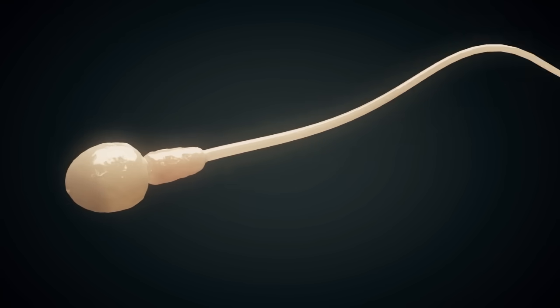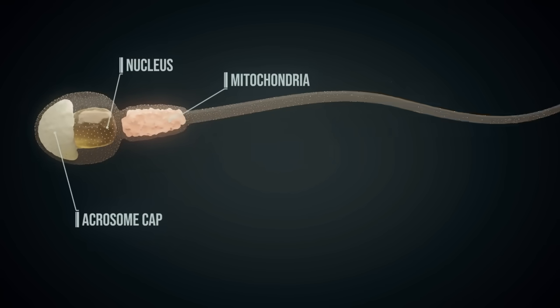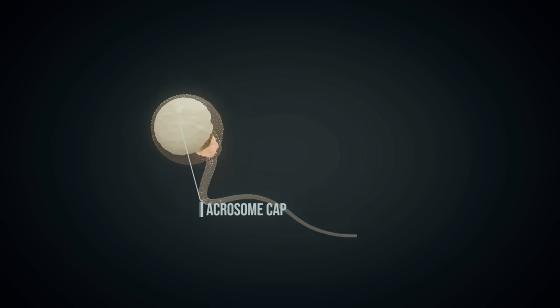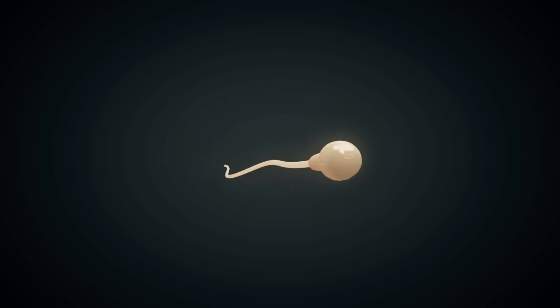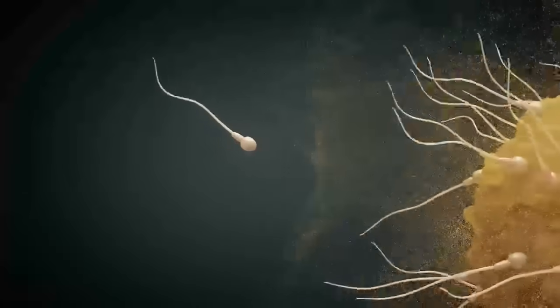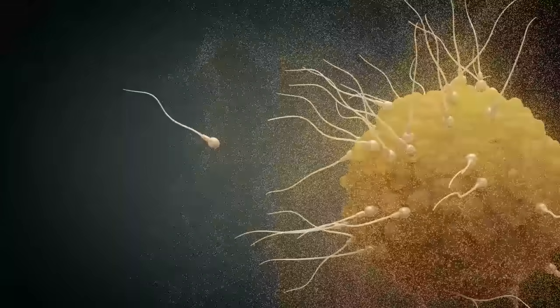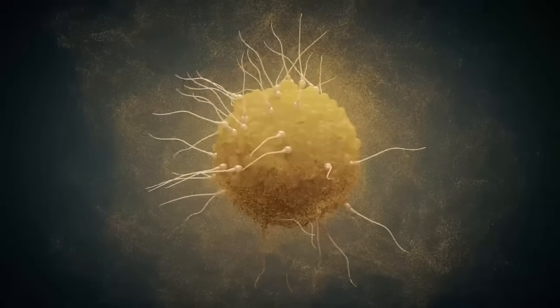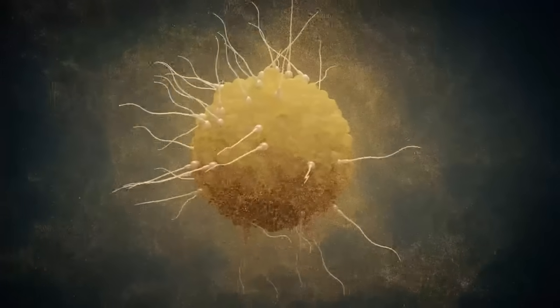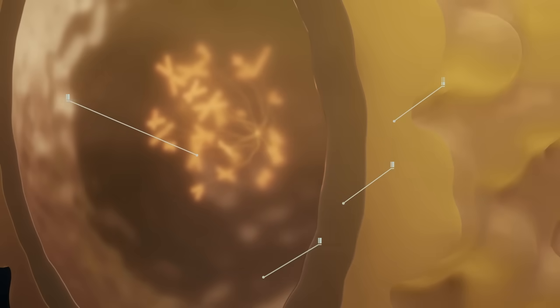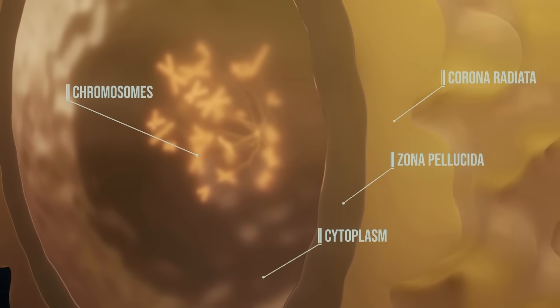A sperm cell's nucleus contains the male's genetic information. Through messenger substances emitted by the egg cell, the remaining sperm cells find their way to the ovum. The goal of all sperm cells is to penetrate the two outer layers to reach the chromosomes.